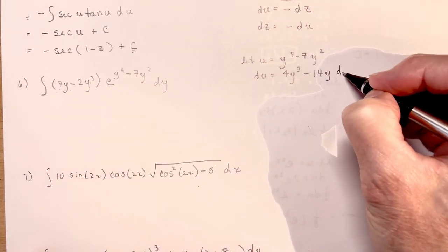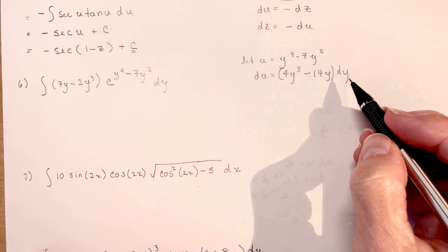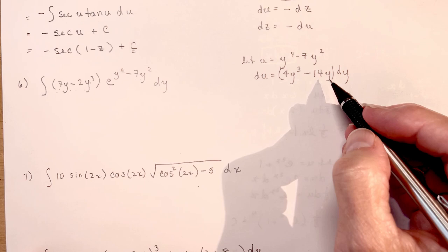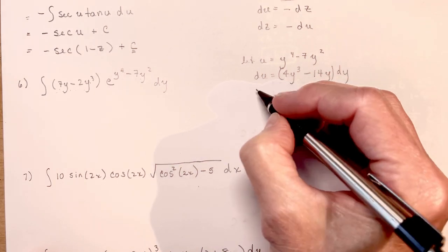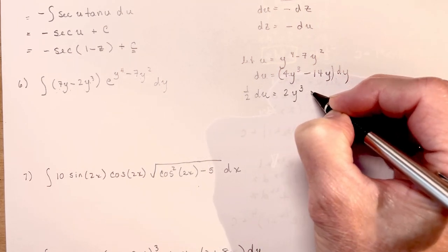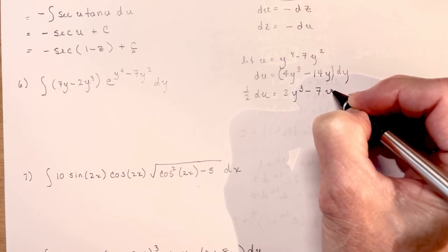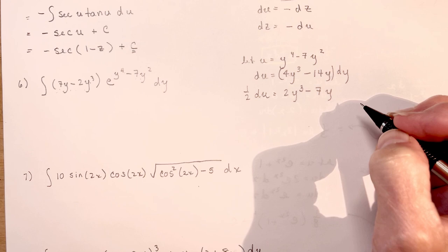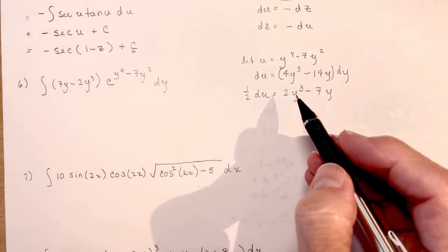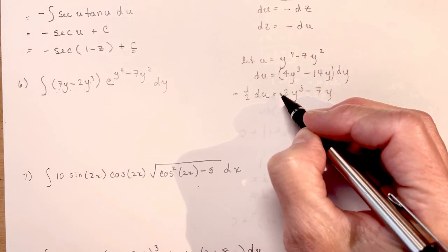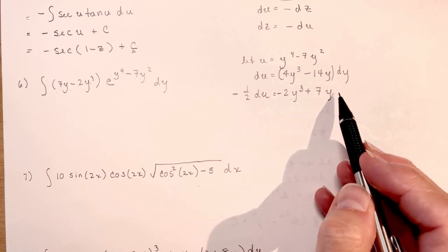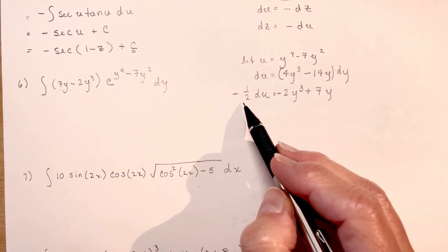Don't forget your dy. That expression is only double what I want, so if I divide by 2, I get 1/2 du equal to 2y cubed minus 7y. Now if I change the sign, that's the same thing as minus 2y cubed plus 7y, or equivalently 7y minus 2y cubed — so this is all good.